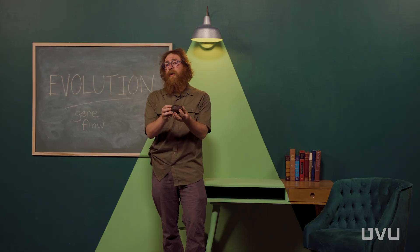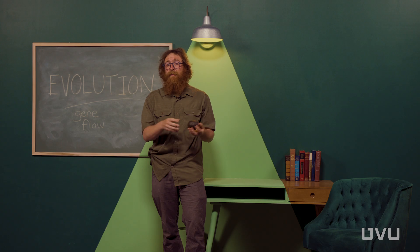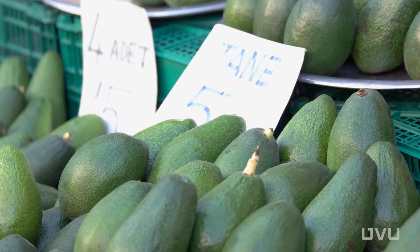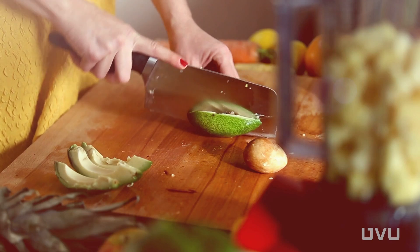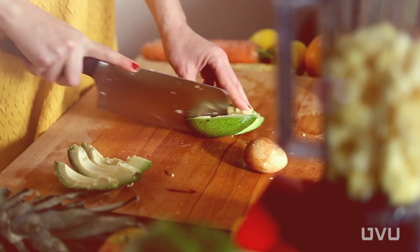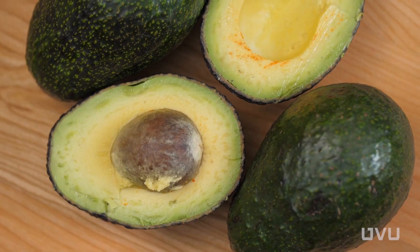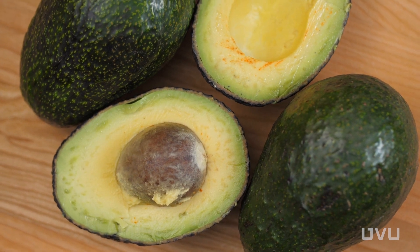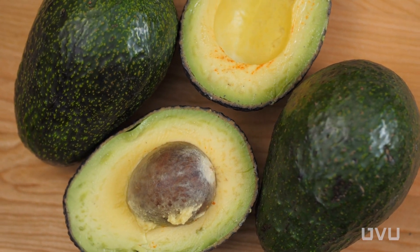This avocado here is a great example of gene flow. Avocados are originally from the southern hemisphere, but they've been moved all throughout the world by humans because they're so delicious. The trick to their success is these great big seeds inside, which make them very easy to move from location to location.